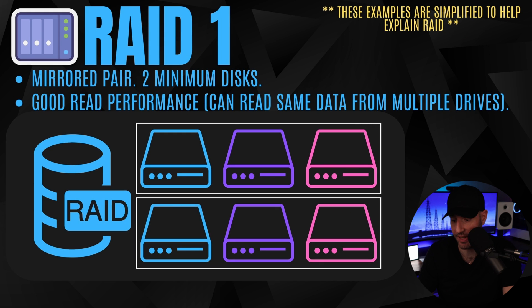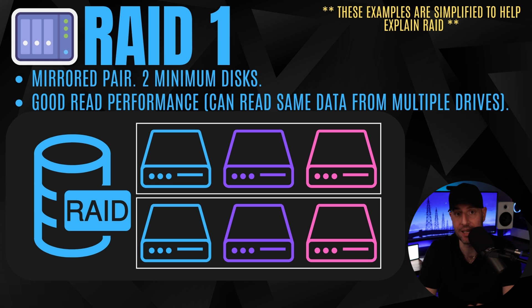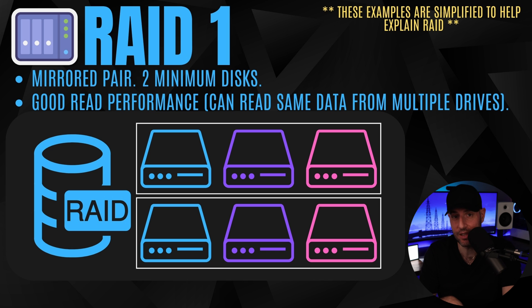The first thing we're going to look at is RAID 1. RAID 1 is simply a mirrored pair. If you have two hard drives, the data will be the exact same on each drive. This is good from a performance perspective because data can be read from either drive — read will be slightly faster, though it will not impact write speeds. You can have more than two drives in RAID 1, but two is the easiest to understand. The key point is you can lose either of those drives without losing any of your data.